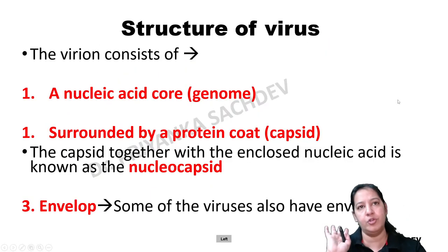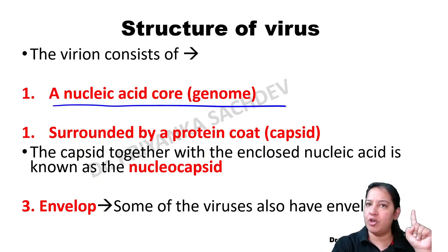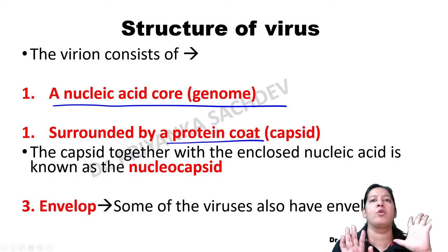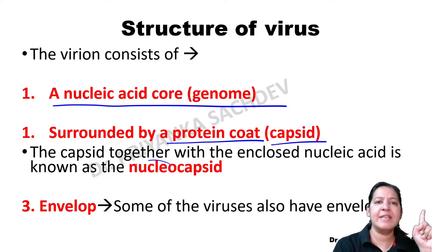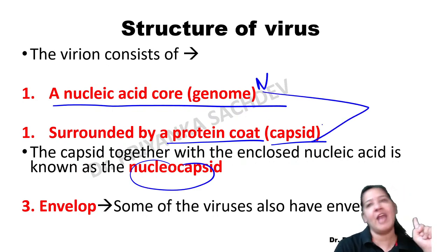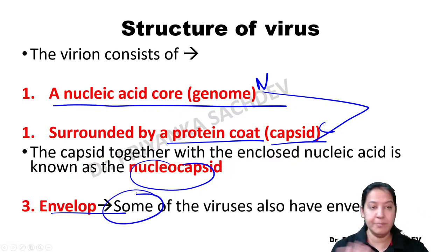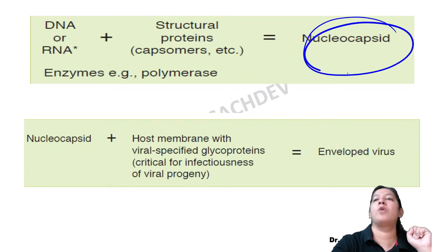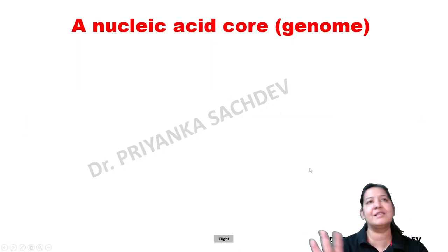Nucleic acid is the genome - it is always present. It is always surrounded by a protein coat called capsid, which is made up of capsomers. So nucleocapsid is always present in all viruses. But envelope is sometimes present and sometimes absent. Nucleocapsid is always, always present. Envelope is sometimes present, sometimes absent.